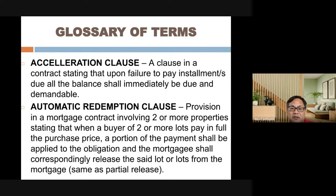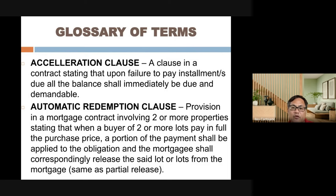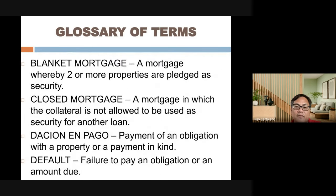Special terms from board exams: the acceleration clause means if you fail to pay installments, the entire balance becomes immediately due and demandable. The automatic redemption clause applies when two or more properties are mortgaged — if the buyer pays in full the purchase price for a portion, the payment shall be applied to the obligation and the mortgage shall correspondingly release those lots. Blanket mortgage means two or more properties are pledged as security. A closed mortgage means the property cannot be used as collateral to secure another loan.